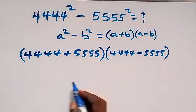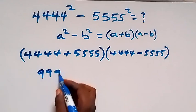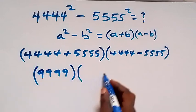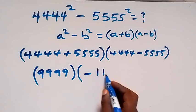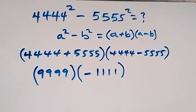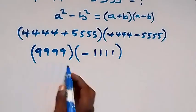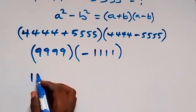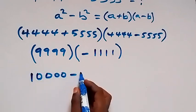When we sum this, we get 9,999. And the difference gives us minus 1,111. Then 9,999 can be written as 10,000 minus 1.